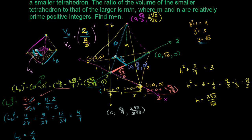Before we even cube it, we can divide the numerator and denominator by 2. So the ratio becomes 1 to 1 third, and 1 over 1 third is the same thing as 3. So 3 cubed is 27, and the ratio of the volume of the big tetrahedron to the small is 27 to 1. This ratio equals m over n, where m and n are relatively prime positive integers — their only common factor is 1. So m plus n equals 27 plus 1, which is 28.